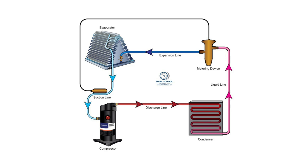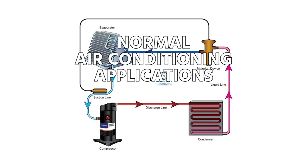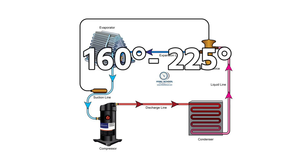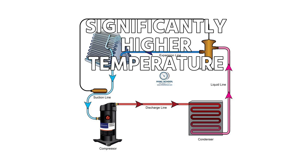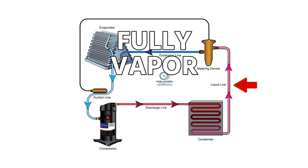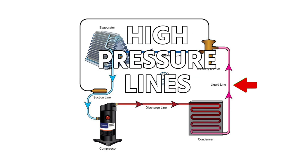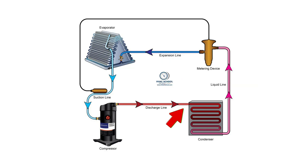Generally speaking, in most normal air conditioning applications, it's going to be somewhere between 160 and 225 degrees, and generally going to be closer to that 160 degree mark. But it's going to be significantly higher temperature than your liquid line and it's going to be fully vapor. So though they are both high pressure lines, one is going into the condenser and one is going out of the condenser.